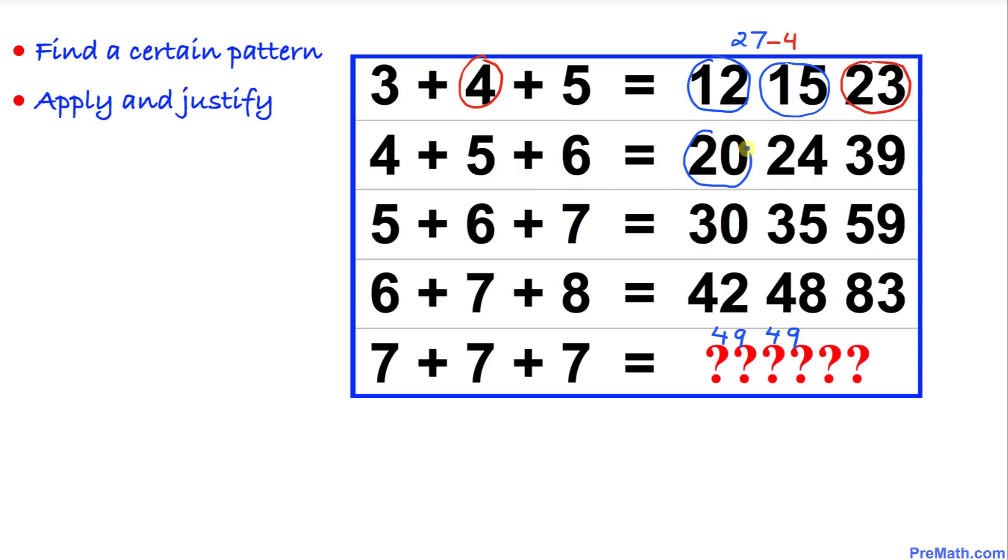20 plus 24 is going to give us 44, and then we are going to subtract this middle number, minus 5, which is going to give us 39.